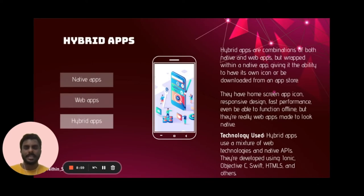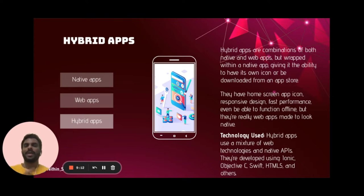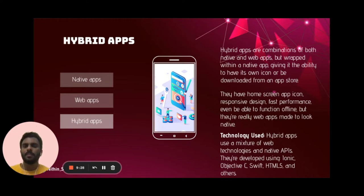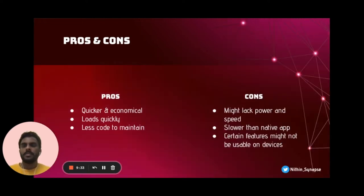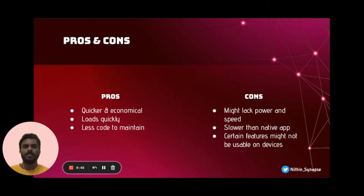The third type is hybrid application. As the name implies, it is a combination of both native and web application, wrapped within a native application framework. It has a screen app icon, a responsive design, is faster in terms of performance, and is even able to work offline. They are essentially web applications that look more like native. In terms of pros and cons, they are quicker and more economical to maintain because some code is shared between platforms, but they may lack power and speed compared to native apps, and certain features might not work on all devices.